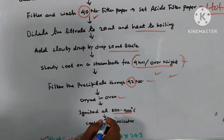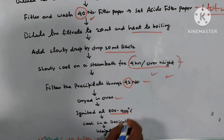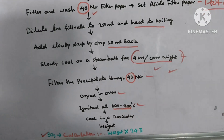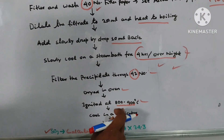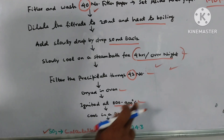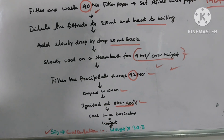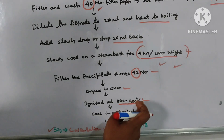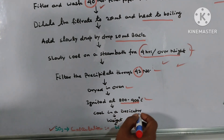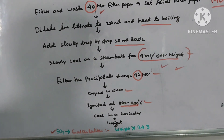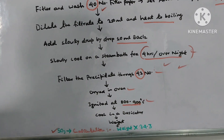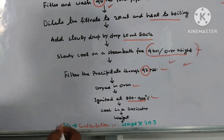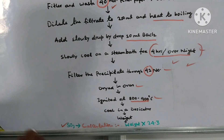Ignite at 800 to 900 degrees centigrade temperature. Then cool in a desiccator. Once complete, cool it in a desiccator and weigh. Then proceed to the calculation method of sulfur trioxide.